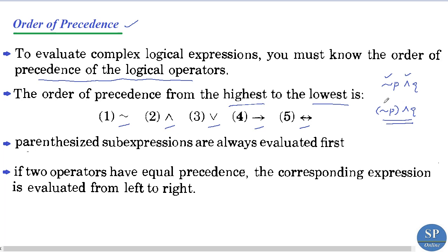That means the order of precedence is: first find the negation, and then perform the conjunction. This is the correct order of operations.